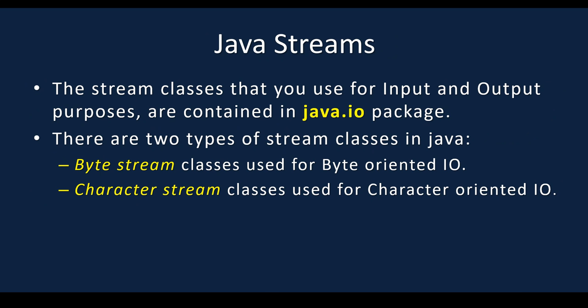For that, you need to know some terms. The first term is Java streams. The stream classes that you use for input and output purposes are contained in the java.io package. Normally we use java.util package to use the Scanner class, but similarly, you can use java.io package for input and output statements available in Java streams. There are two types of stream classes available in Java: byte stream and character stream. Byte stream classes are used for byte-oriented input and output, and character stream classes are used for character-oriented input and output.